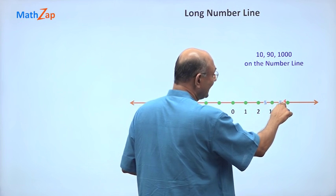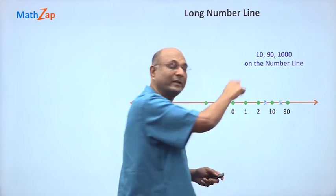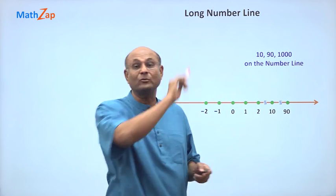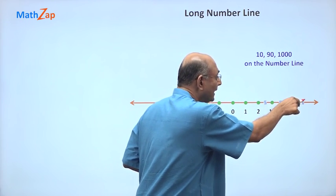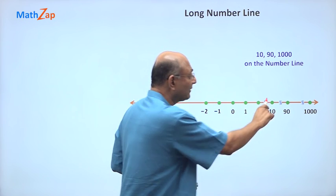1000. 90, 91, 92, 100, 200, 300, you will keep going. So 1000 is definitely to the right. So that means I must put a break and then put 1000 after the break.